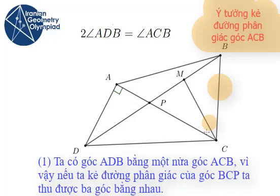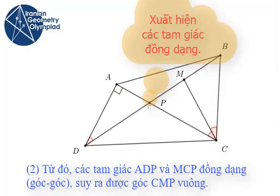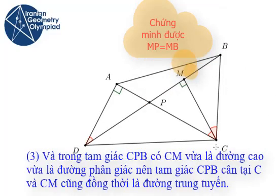So triangle PAD and triangle PMC will be similar because these two angles are equal and these two angles are equal. So angle M is a right angle, and because in triangle CBP the altitude and the angle bisector of this angle are the same,